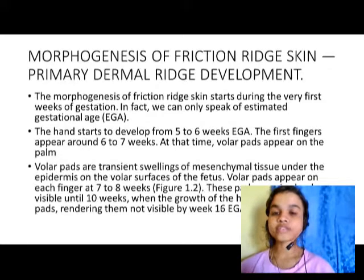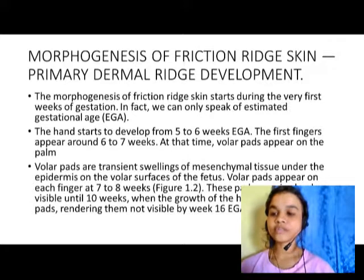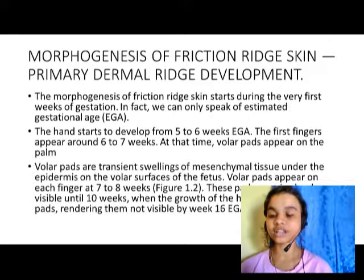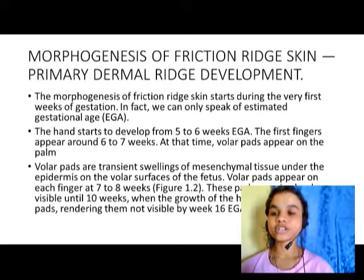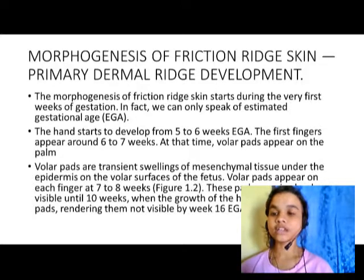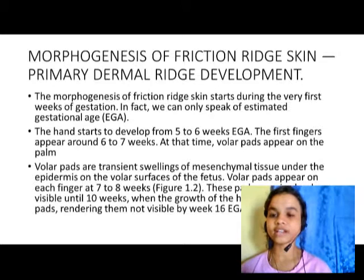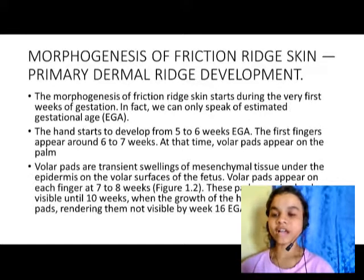Now we will talk about the morphogenesis of friction ridge skin — specifically primary dermal ridge development. The morphogenesis of friction ridge skin starts during the very first weeks of gestation. We can only speak of estimated gestational age, not accurate gestational age. We are talking about how the primary dermal ridge development takes place as a child is developing in the womb.